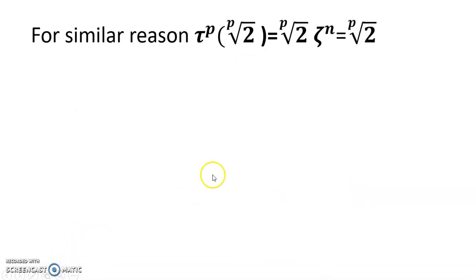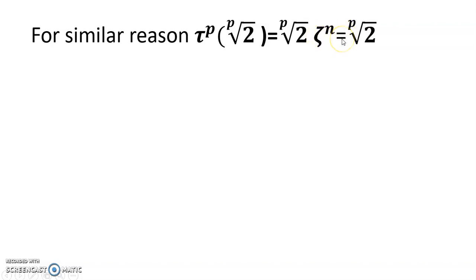For similar reason, τ^p(2^(1/p)) = 2^(1/p) · ξ^p. And ξ^p = 1 because ξ is the p-th root of unity. So τ^p(2^(1/p)) = 2^(1/p), meaning τ^p equals the identity.